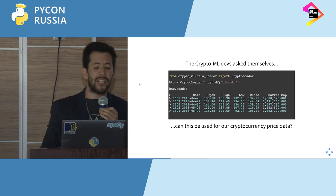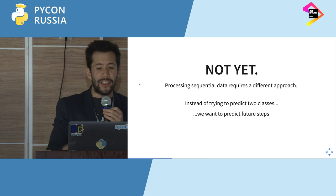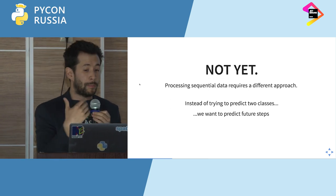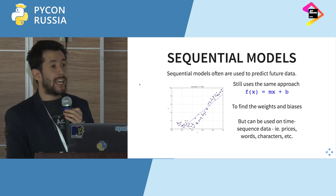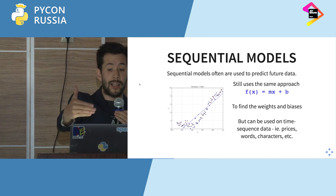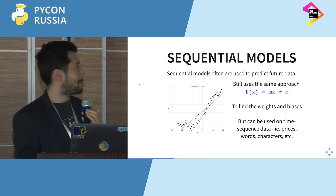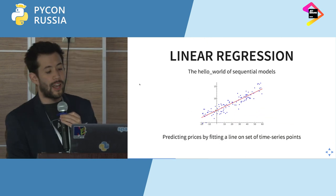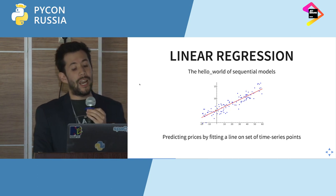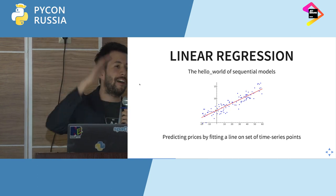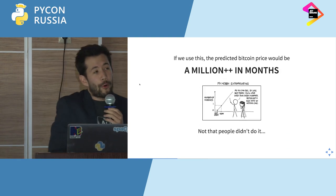The CryptoML devs ask themselves: can we actually use this for cryptocurrency price data? This approach is more specifically for classification, not for sequential models. For sequential models, we want to predict the next time step. The hello world of sequential models — and arguably machine learning — is linear regression, which allows us to fit a line through all the data points and use that to predict the next point in time.